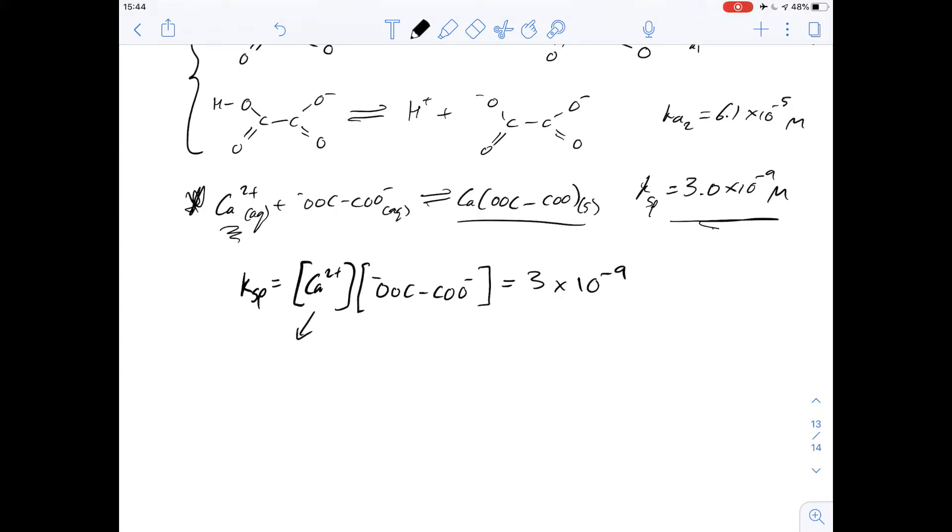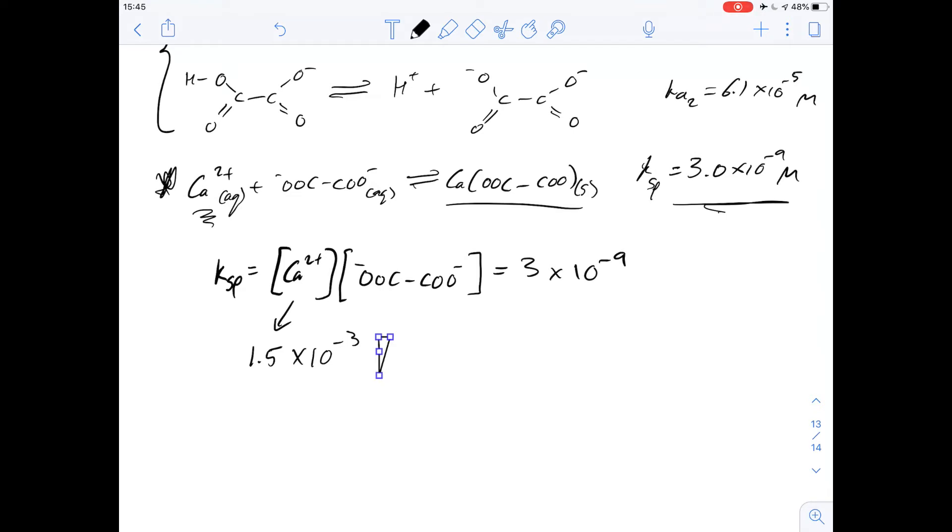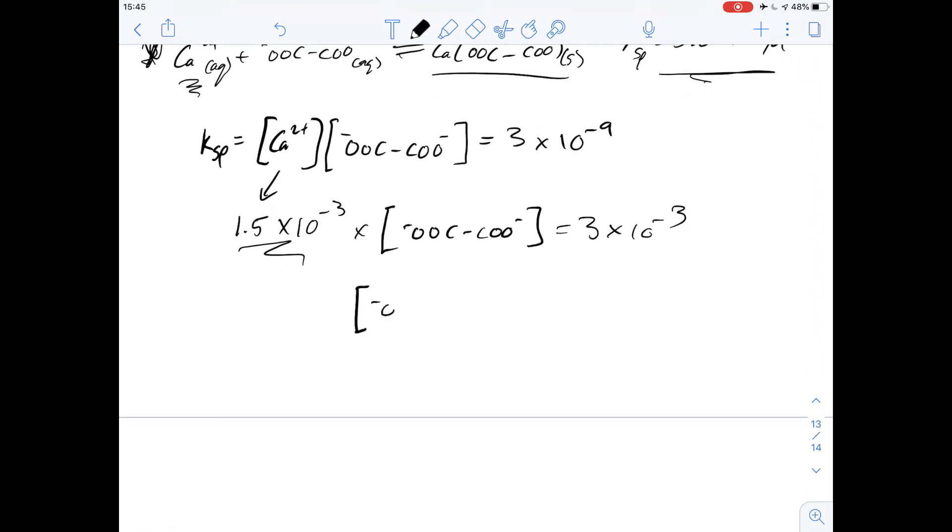So the value for calcium ions we're given is 1.5 millimolar. Now of course this is in molar so we need to convert that to millimolar so we add a 10 to the minus 3 on it and then we multiply that by the concentration of the oxalate ion which is this here and what we need to do then is divide through by this number on both sides. So the concentration of what we're looking for which is this oxalate ion is going to be 3 times 10 to the minus 9 divided by 1.5 times 10 to the minus 3 and then that of course gives us 2 times 10 to the minus 6.